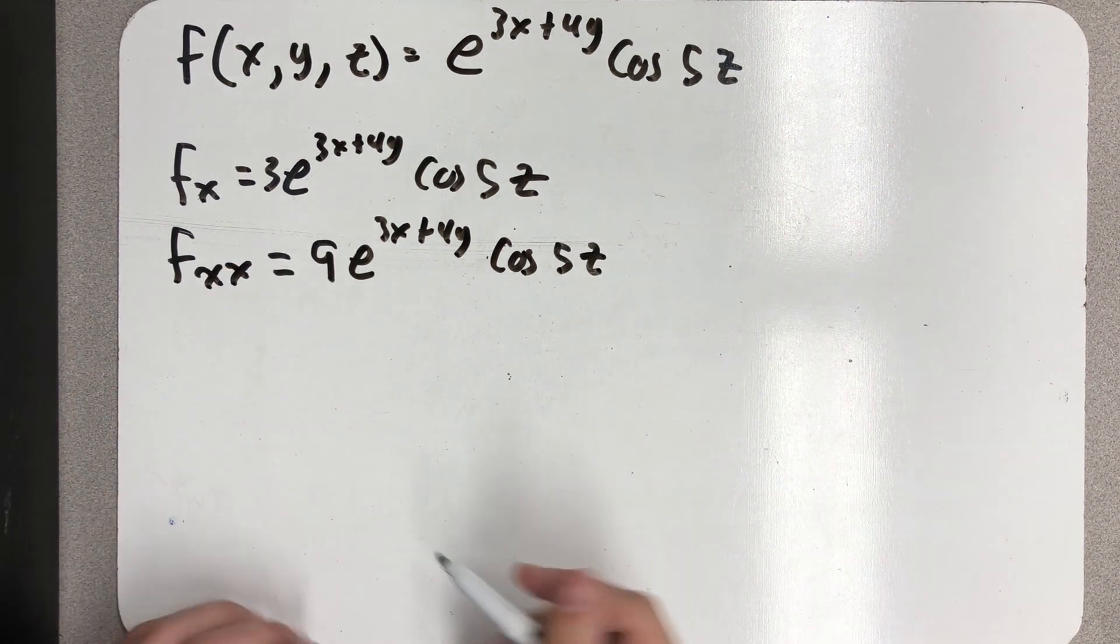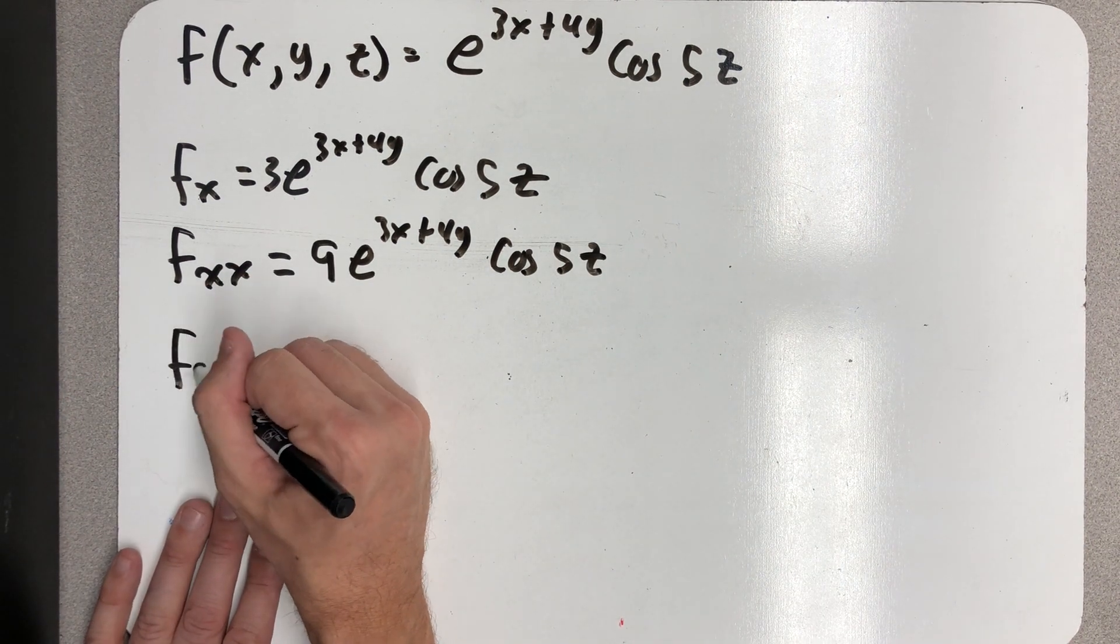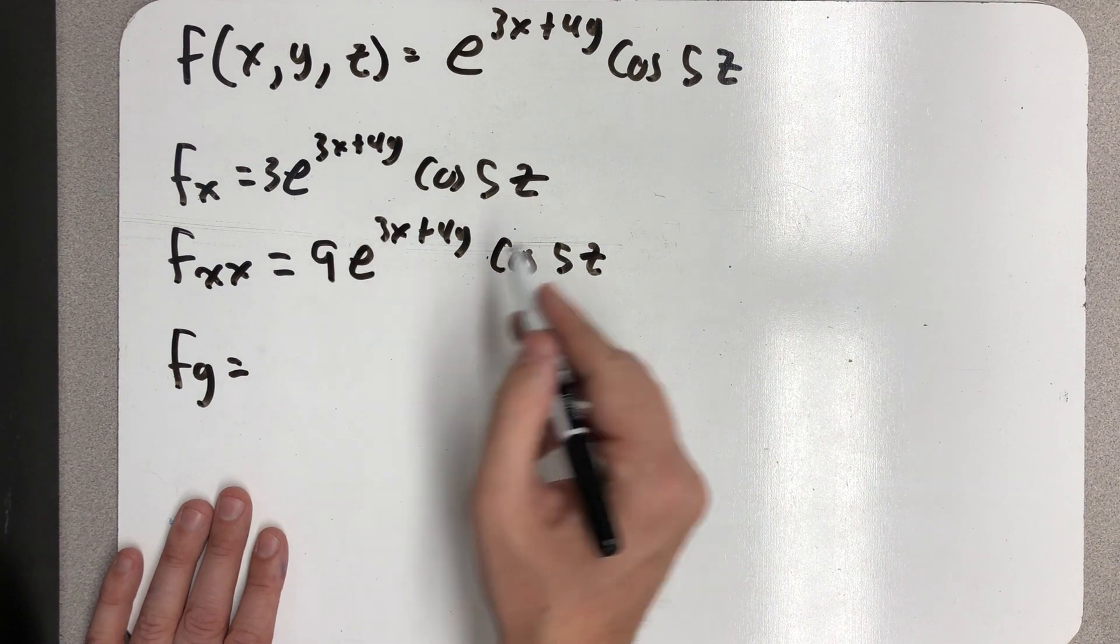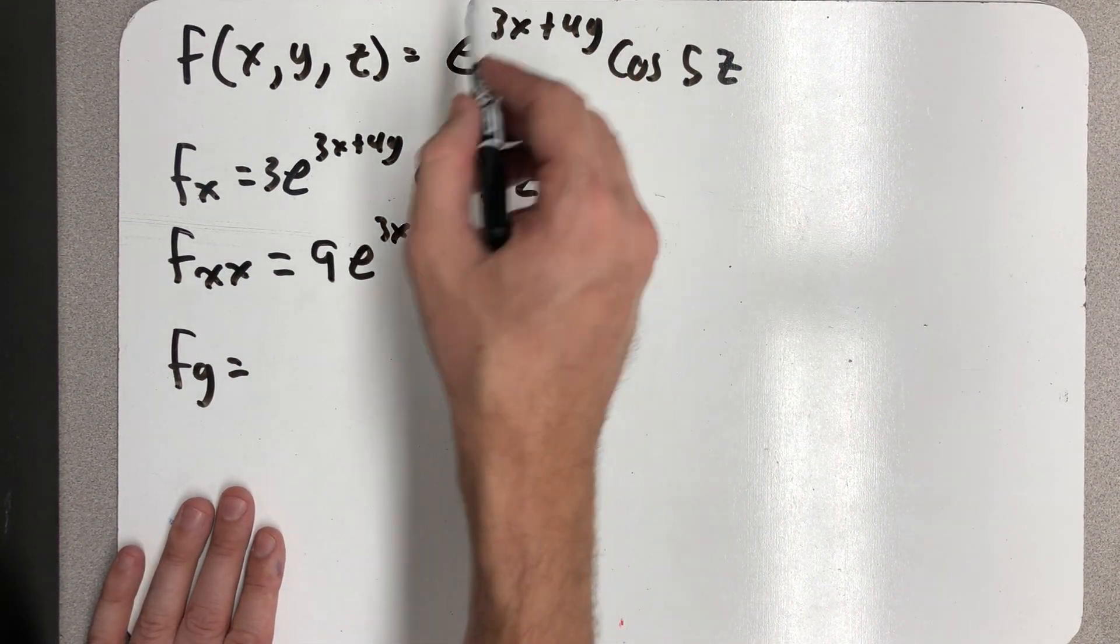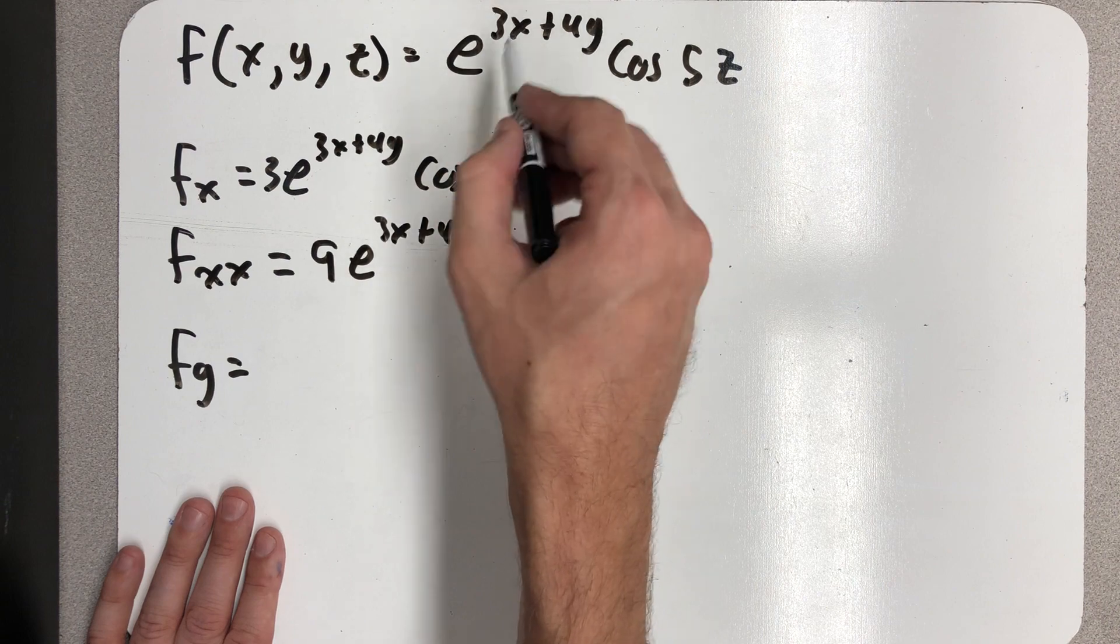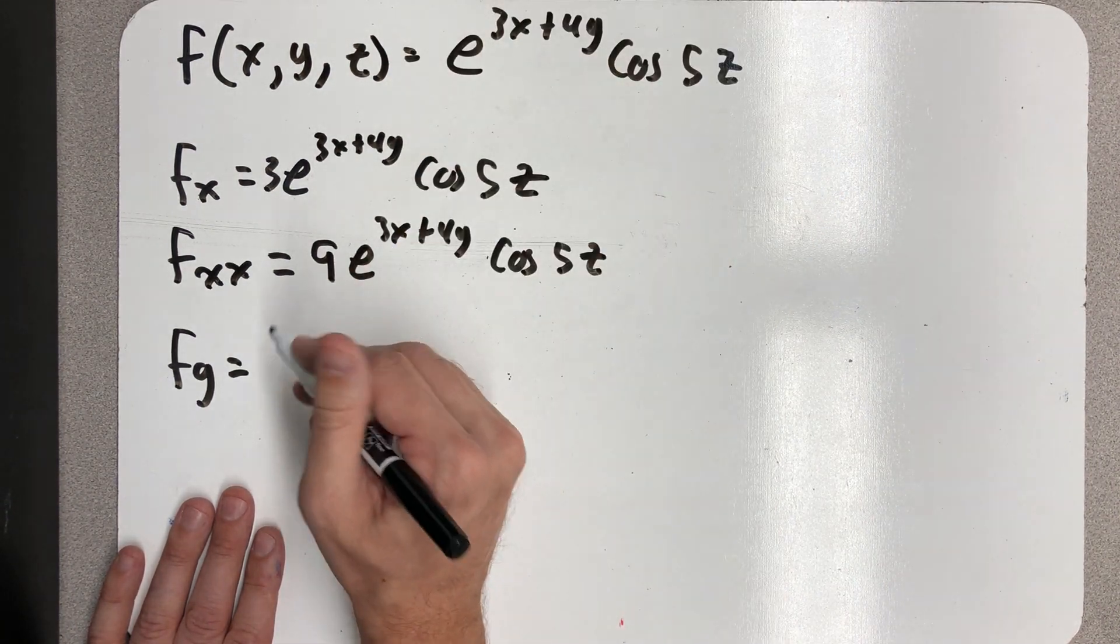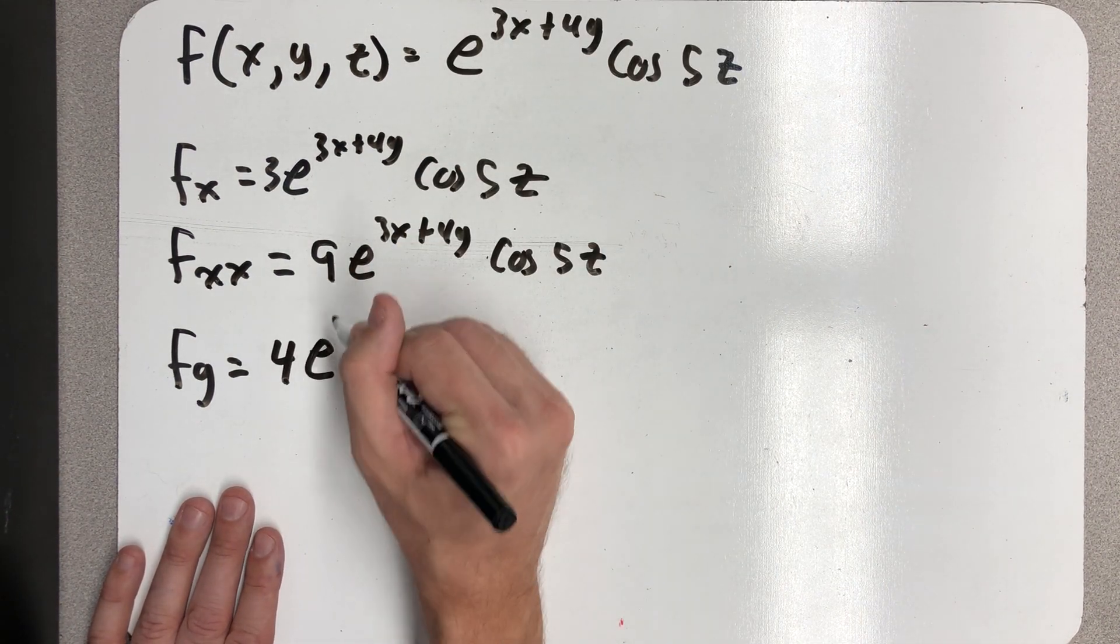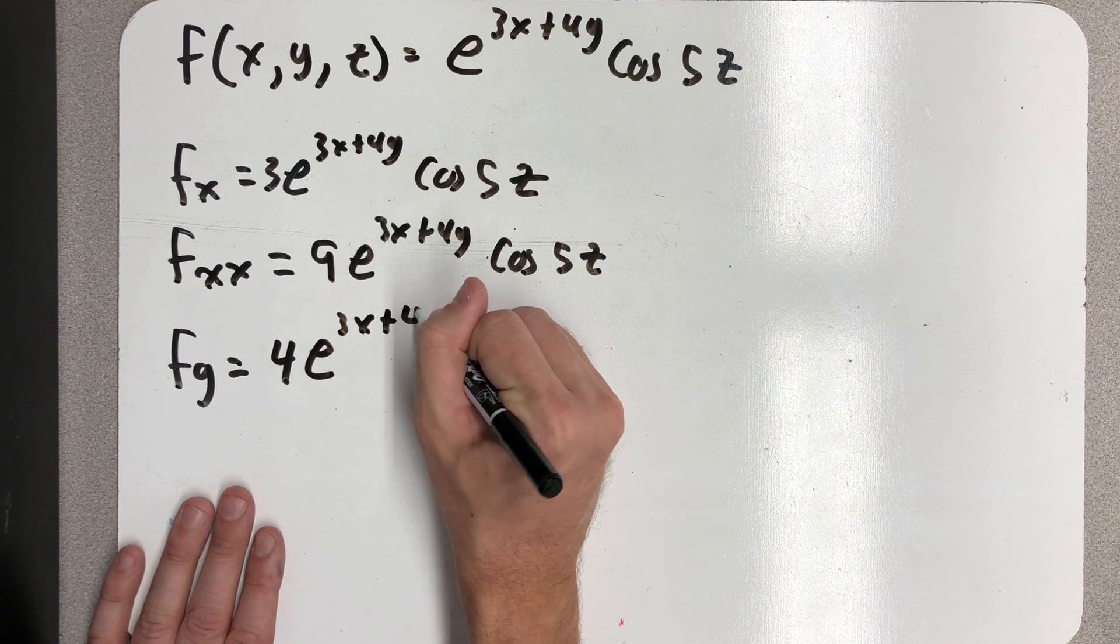Let's take a partial with respect to y. All right, well if I think about it, the only thing that's going to change is the chain rule part, right? Instead of taking the derivative of the 3x, it'll be the 4y. So I can think my way through this.